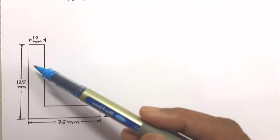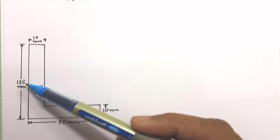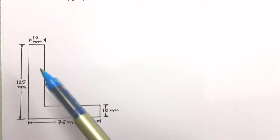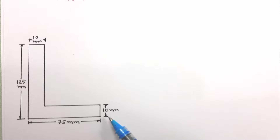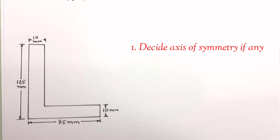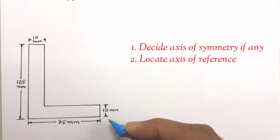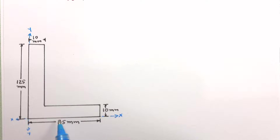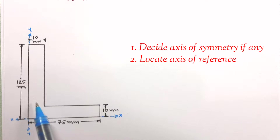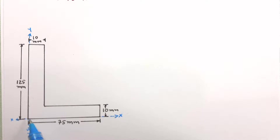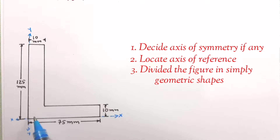This is the angle section with the longer leg 125 mm, shorter leg 75 mm, and thickness of both legs 10 mm. The first step is to decide the axis of symmetry. Since this section is not symmetrical, an axis of symmetry is not available, so both x̄ and ȳ need to be worked out. Let us fix the reference axes — this is the XX axis and the YY axis, selected so the object remains in the first quadrant.